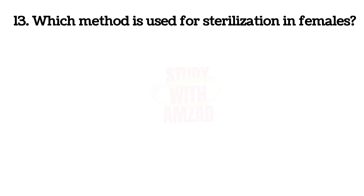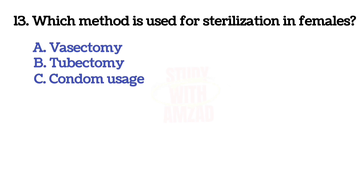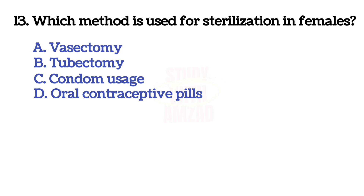Next question: which method is used for sterilization in females? The correct answer is B, tubectomy.